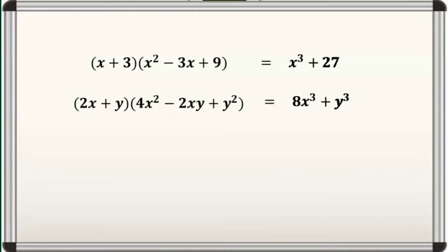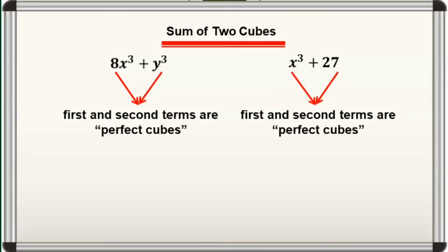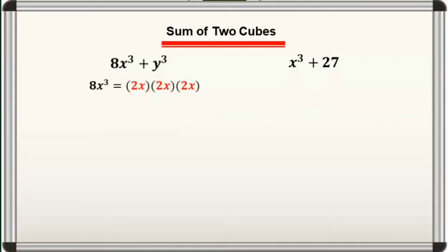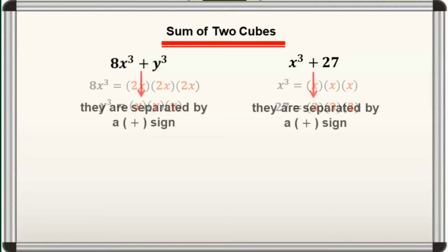From our previous activity, we have multiplied a binomial and a trinomial to get the following results. Ang right-side expressions ay tinatawag natin sum of two cubes. Bakit? Dahil ang first and second terms ay perfect cubes — ibig sabihin, makakahanap tayo ng number o term na kapag gagamitin natin as a factor ng tatlong beses, ang results ay ang given perfect cubes. For instance, in the first one, 8x cubed is equal to 2x times 2x times 2x, and y cubed is equal to y times y times y. Moreover, yung dalawang terms ay separated ng plus sign — that is why, again, sum of two cubes ang tawag sa kanila.